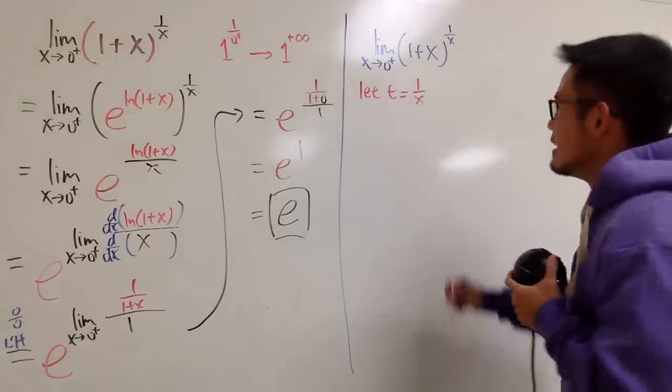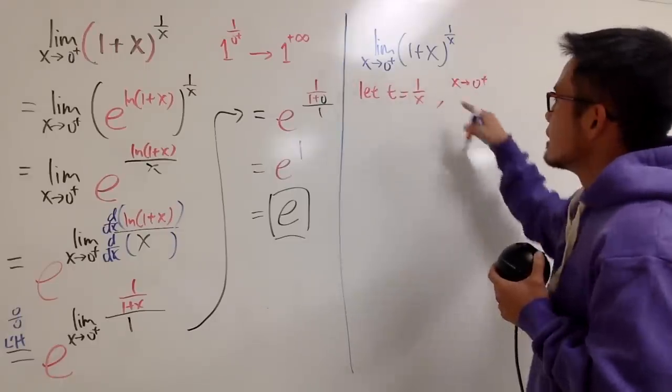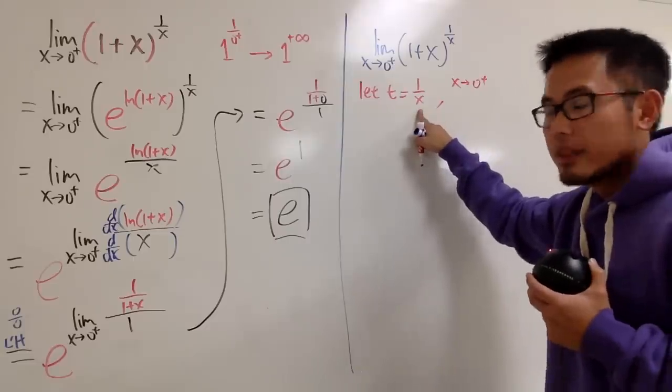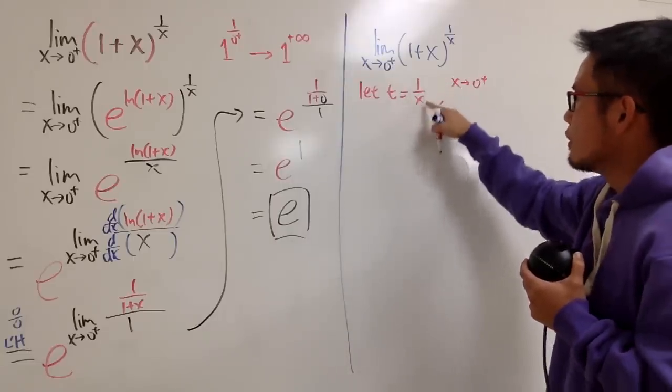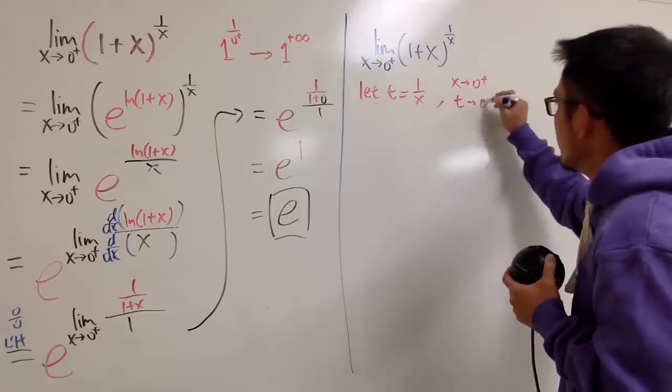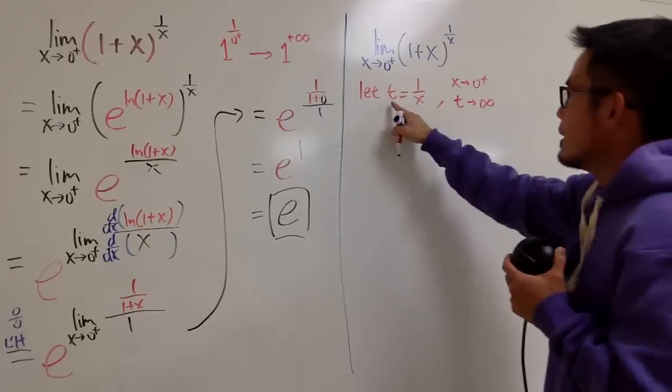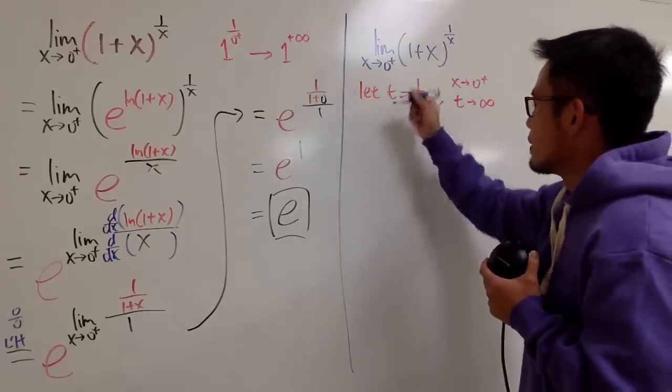Okay? So as you can see, x is going toward 0 plus. When you're plugging 0 plus right here, that means t will be approaching to 1 over 0 plus, meaning t has to go to positive infinity. Okay? In the meantime, let's just write this down now.